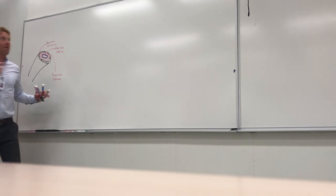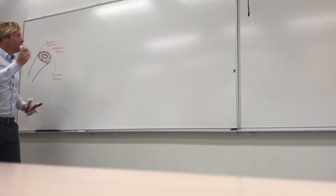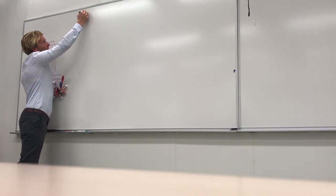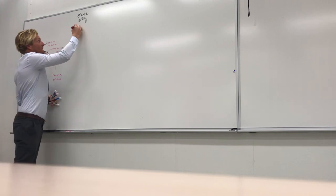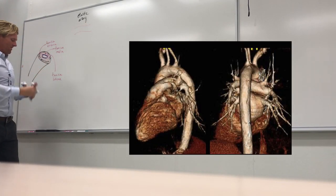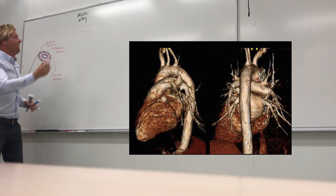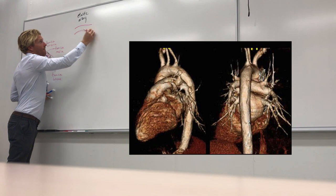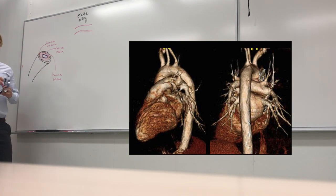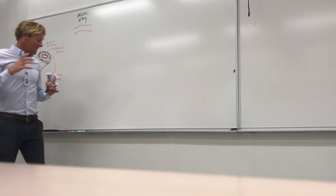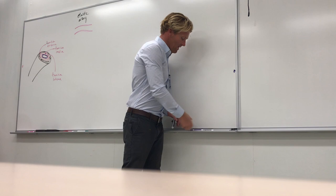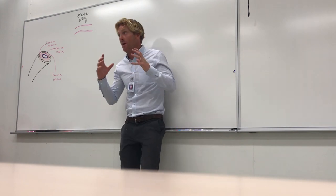The aortic arch, which curves around and becomes the abdominal aorta, is called an elastic artery — an example of the largest arteries in the body. Based on their name, they contain a lot of elastic fibers, which allows them to stretch. This ability to stretch is really important.